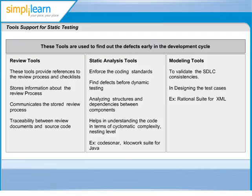Features of static analysis tools include support to calculate metrics such as cyclometric complexity or nesting levels, enforce coding standards, analyse structure and dependencies, aid in code understanding, and identify anomalies or defects in the code.